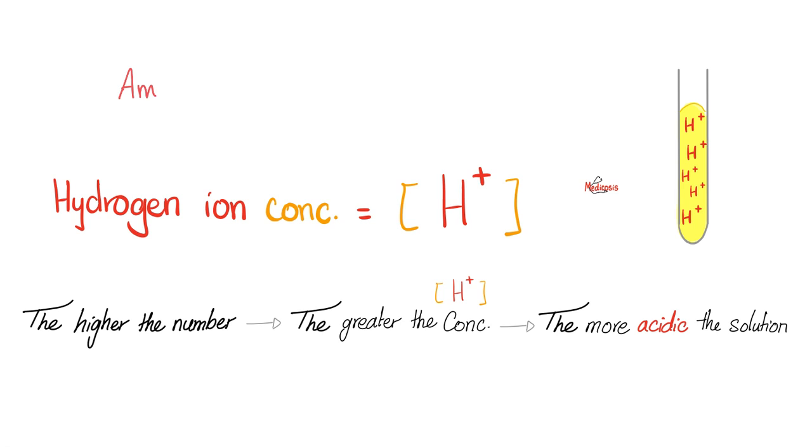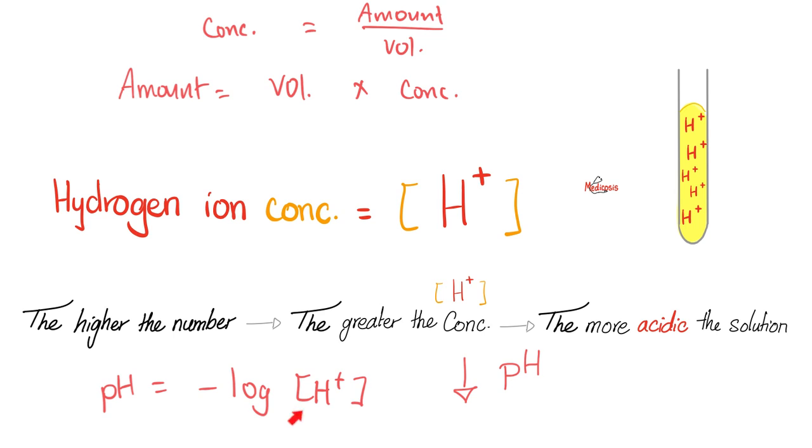What is hydrogen ion concentration? It's the concentration of hydrogen ion in a fluid. And as you know, amount equals volume times concentration. Therefore, concentration equals amount over volume. Therefore, when I say the concentration of hydrogen ion here is X, it means it's the amount of hydrogen ions divided by the volume of the solution. This gives you the hydrogen ion concentration. Of course, you know that the higher the number of hydrogen ions in the test tube, the greater the concentration of hydrogen ion and the more acidic the solution, but the lower the pH.